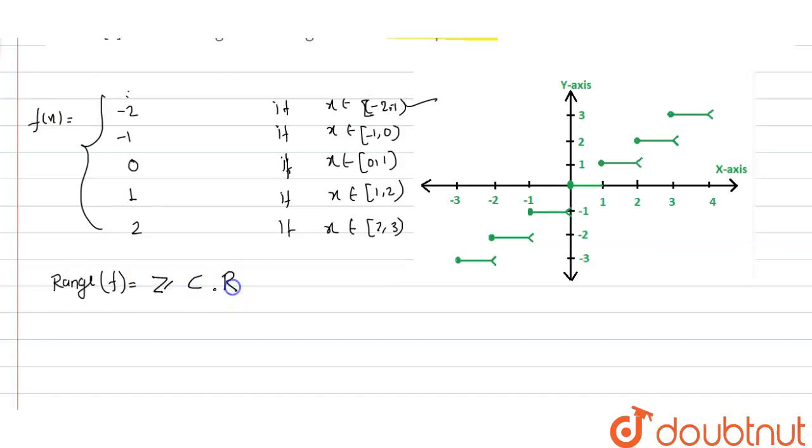The range is Z, which is a proper subset of R. This implies that f(x) is not onto because the range of the function is a proper subset of the co-domain.